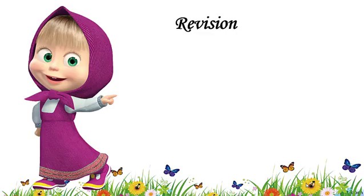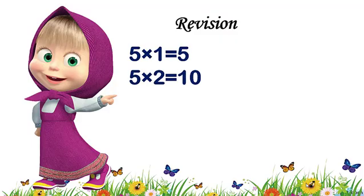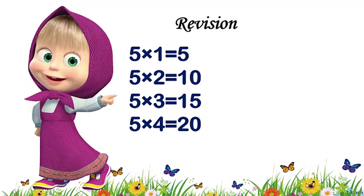5 ones are 5, 5 twos are 10, 5 threes are 15, 5 fours are 20, 5 fives are 25.